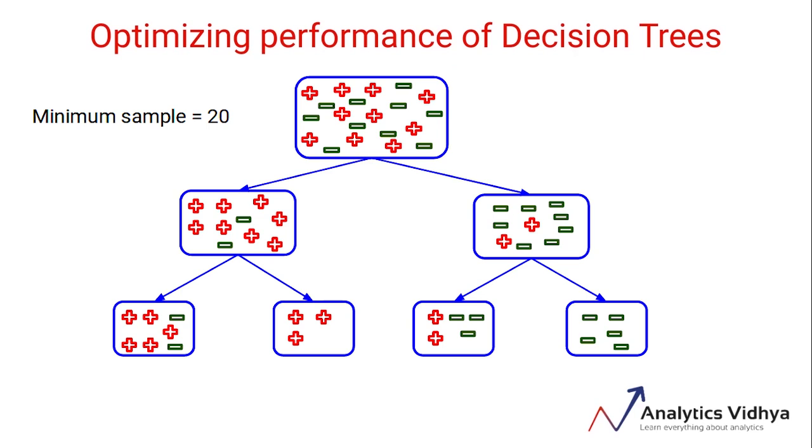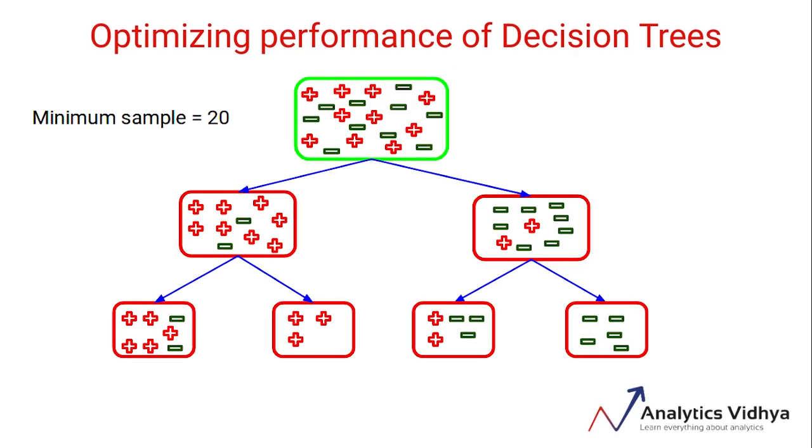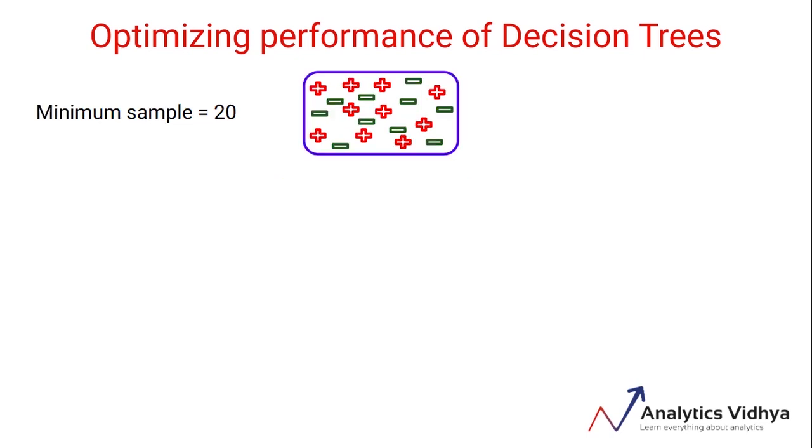Let's say we set the minimum samples for a leaf node to be 20. As all the red nodes here have less than 20 samples, they will not be considered as the leaf nodes, so we are not able to split the root node at all into any further sub-nodes. Our model will not learn the patterns, and hence setting this too high can lead to underfitting. We should choose a value which is not too high and not too low.